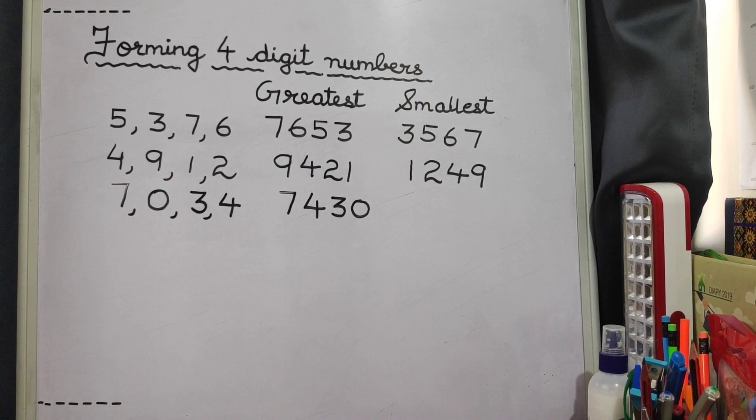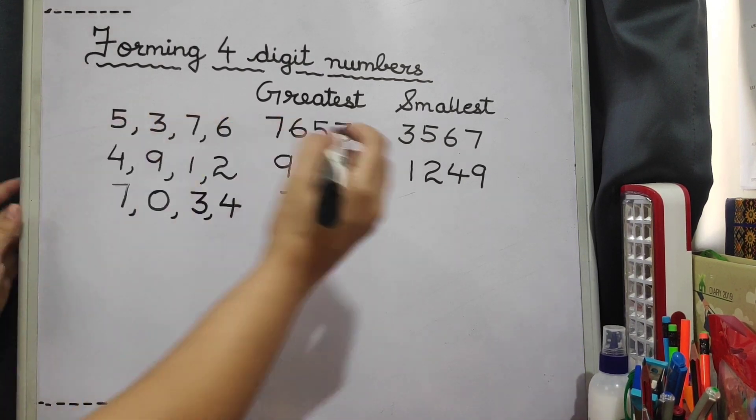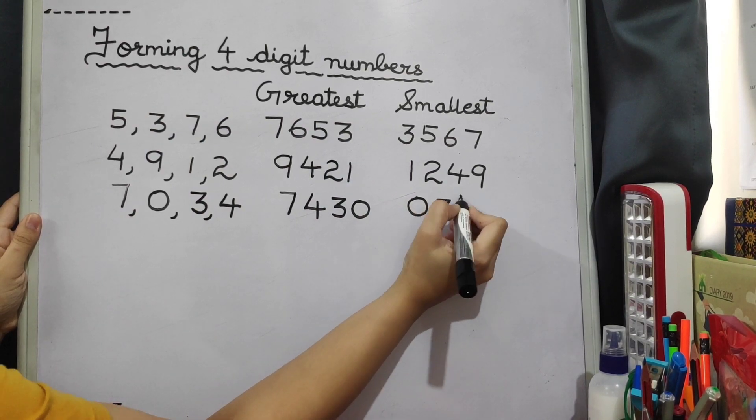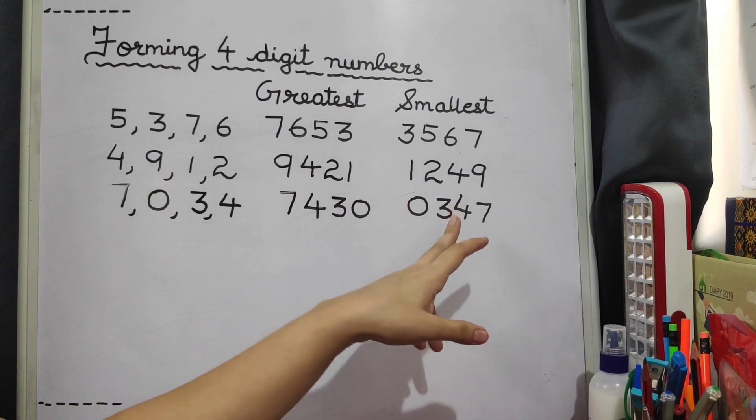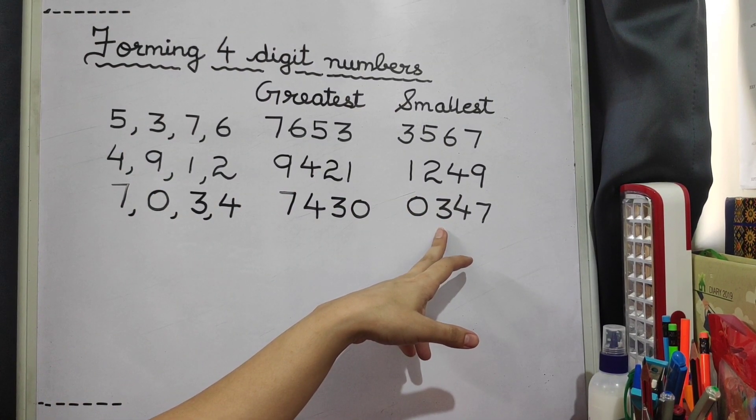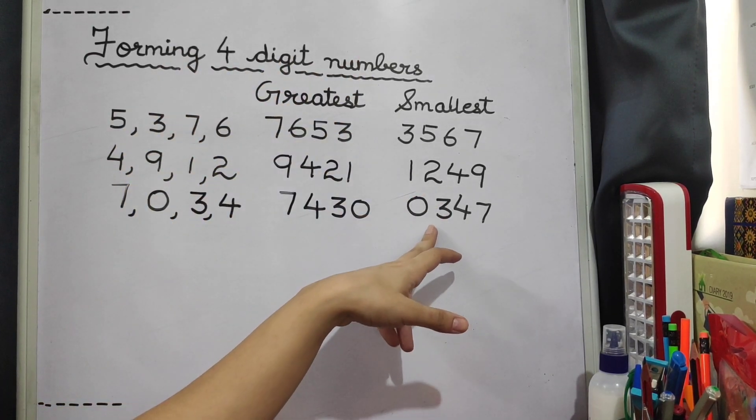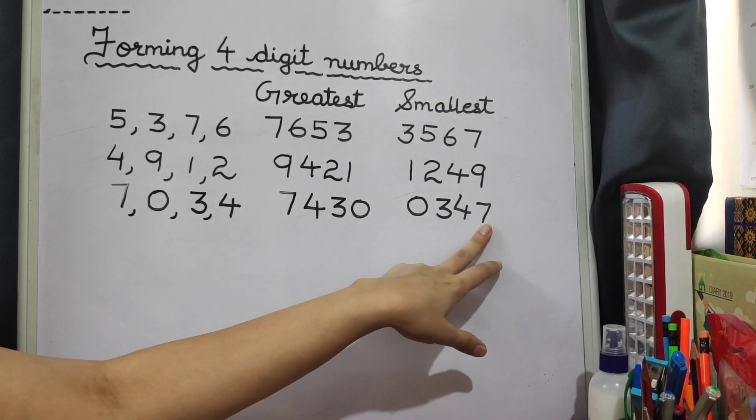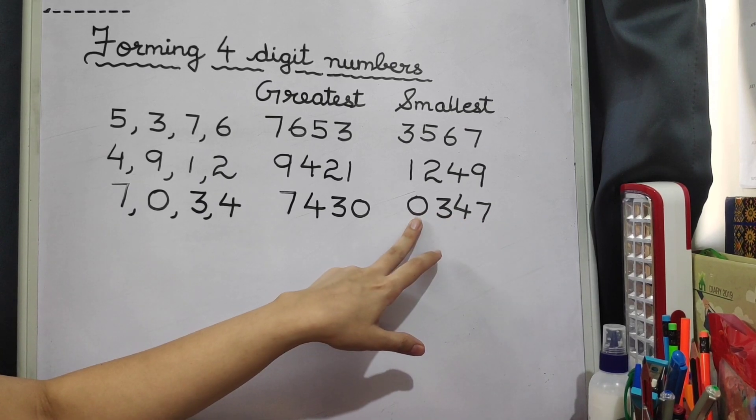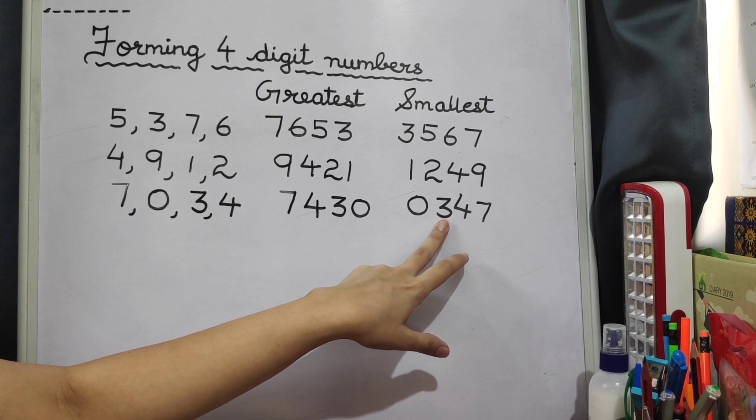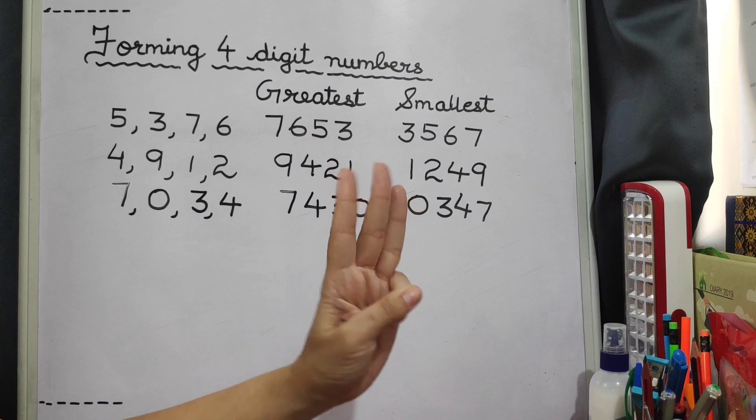And the smallest will be 0, 3, 4, 7. Now think children. Is this a 4 digit number? Because in the question it is 4 digit numbers which you have to form. So is this a 4 digit number? No. It's 347 because 0 is there before 3. So it doesn't have any value. So 347 is a 3 digit number.